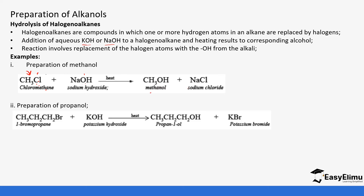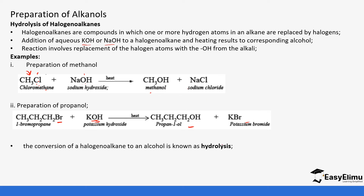Another example is the preparation of propanol. If we react 1-bromopropane with potassium hydroxide, there is an interchange of the OH ions with the bromide ions to form propanol, and potassium bromide is formed in the process. The conversion of a haloalkane to an alcohol is referred to as hydrolysis. The reagent is the alkali and the condition for this reaction is heat.